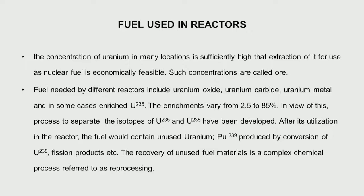Once the fuel has been utilized in the reactor, it will contain some unused uranium - not all uranium would have been used - and then plutonium-239, which is produced by conversion of uranium-238, and some fission products. This uranium-238, which is 99.3%, gets converted to plutonium-239, and this plutonium-239 is again fissionable. So this is a manmade fissile material. Recovering this plutonium-239 and unused uranium is what is called reprocessing.